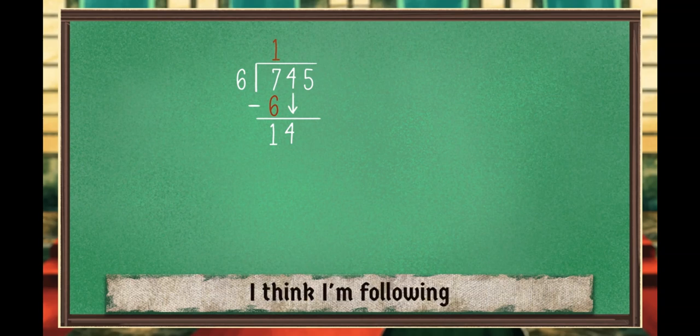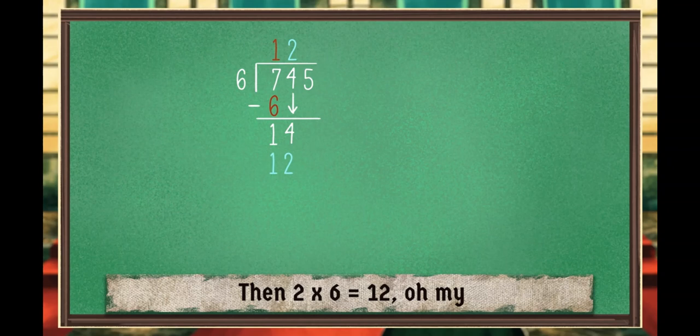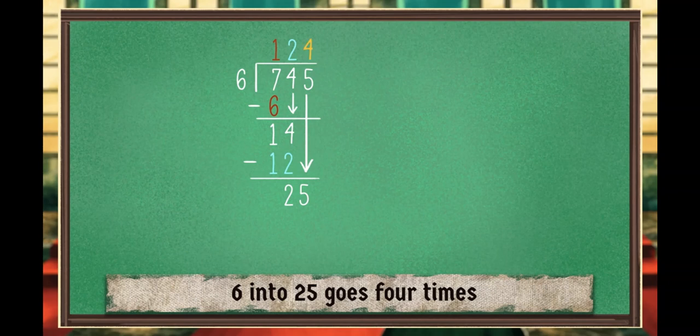My king, you get it? I think I'm following. 6 into 14 is 2 times. Then 2 times 6 is 12. Oh my. 14 minus 12 is 2. So we write it and bring down the 5. I'm getting excited. 6 into 25 goes 4 times. 4 times 6 is 24.